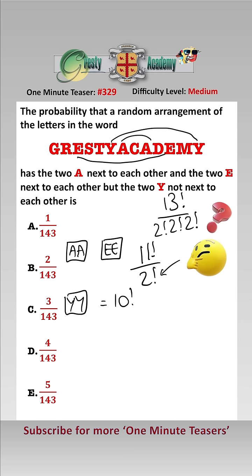So the number of arrangements where the 2As are next to each other and the 2Ys are not is 11 factorial over 2 factorial minus 10 factorial, and the probability therefore we have to divide that by 13 factorial over 2 factorial, 2 factorial, 2 factorial.